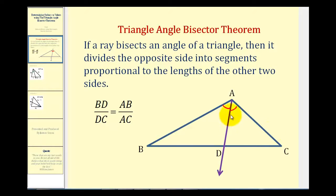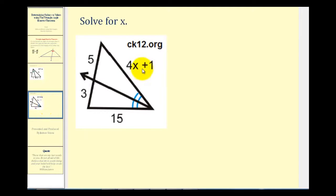And of course this would change based upon which angle is being bisected. Let's take a look at our examples. Here we want to solve for the value of X given that this ray bisects this angle of the triangle.